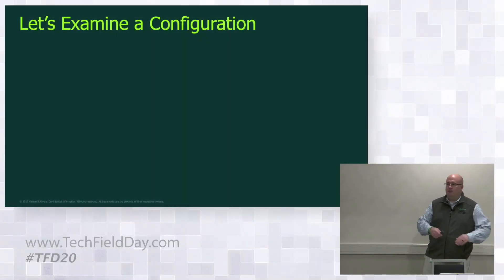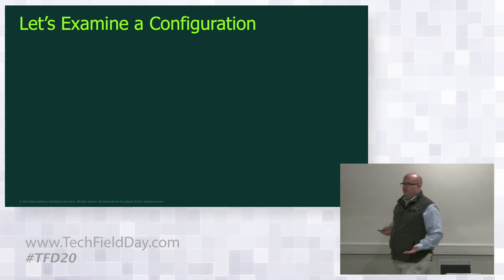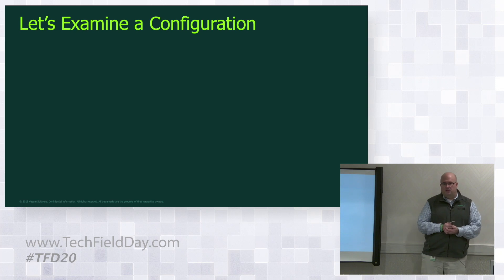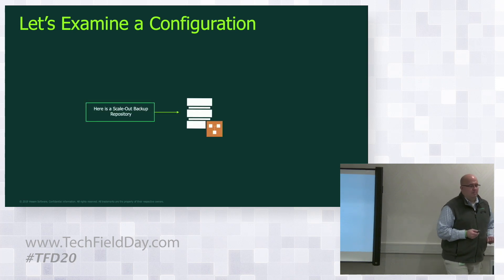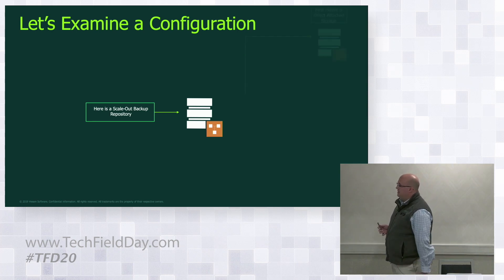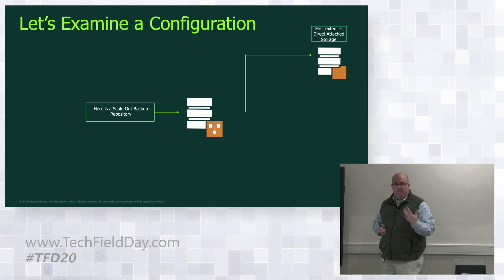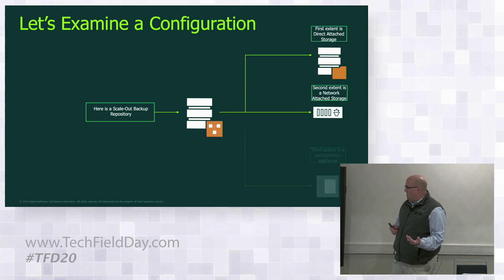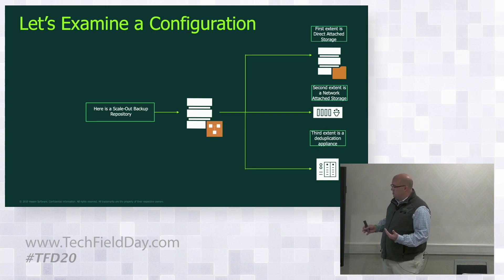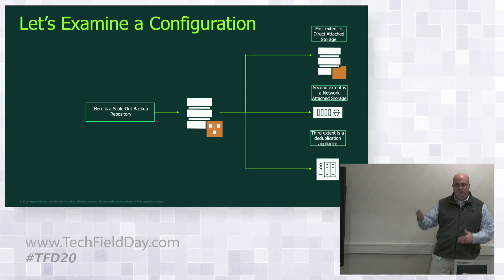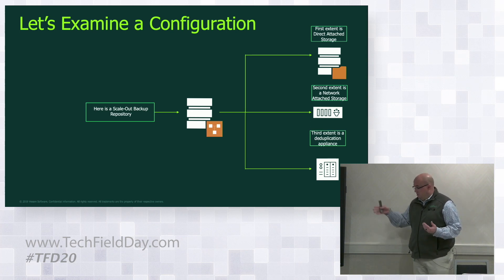If I were to examine a scale-out backup repository, as a Veeam user that's where I put my backup jobs — it would be built upon, in this case, three different storage resources. I've intentionally mixed it up: direct attached storage, network attached storage, and a deduplication appliance. You can do more than three, you can do multiple types. I had one organization take all of their local storage and pool it together — it was actually an interesting idea.